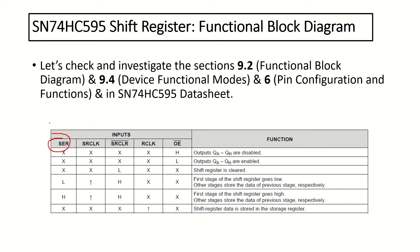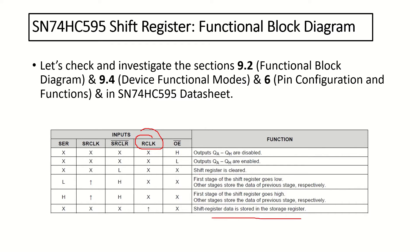Here we see how to push input bits to the serial input. While the input is in high state, we send the rising edge from the shift register clock pin, and the first stage of the shift register goes high; other stages store the data of the previous stage respectively. While the input is in low state and we send the rising edge from the shift register clock, the first stage goes low, and other stages store the data of the previous stage respectively. As soon as we send the rising edge from the storage register clock, the shift register data is stored in the storage register.